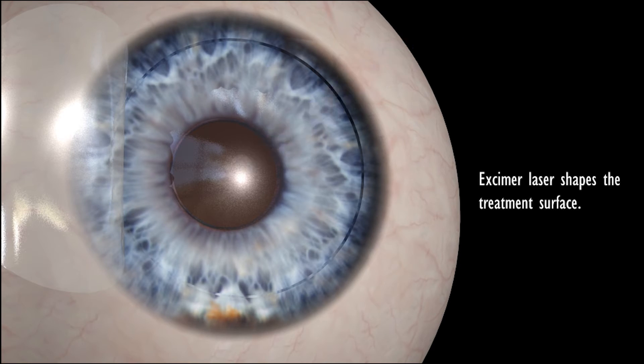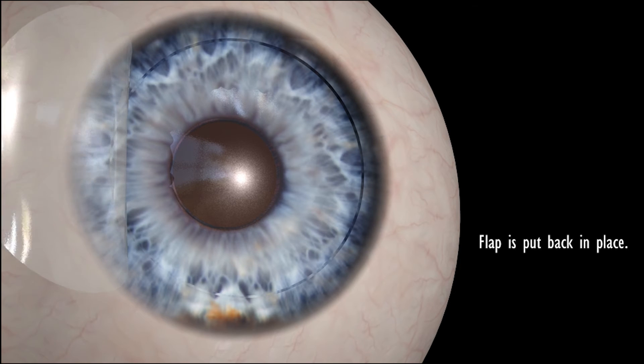Now a second laser, an excimer laser, performs the actual correction of the cornea. It reshapes the curvature of the cornea to the desired refraction.